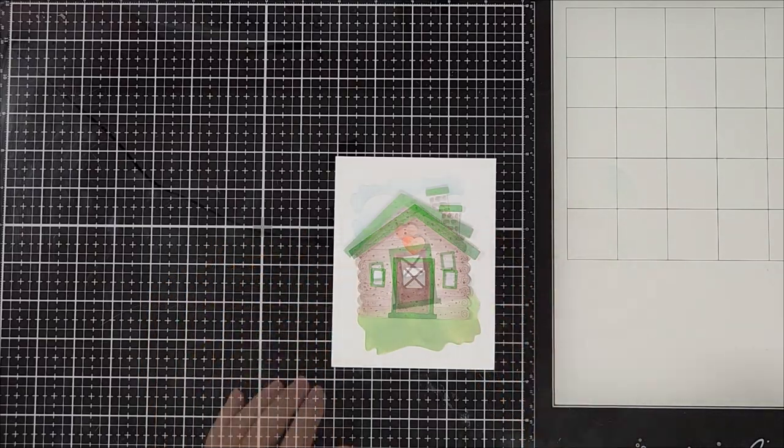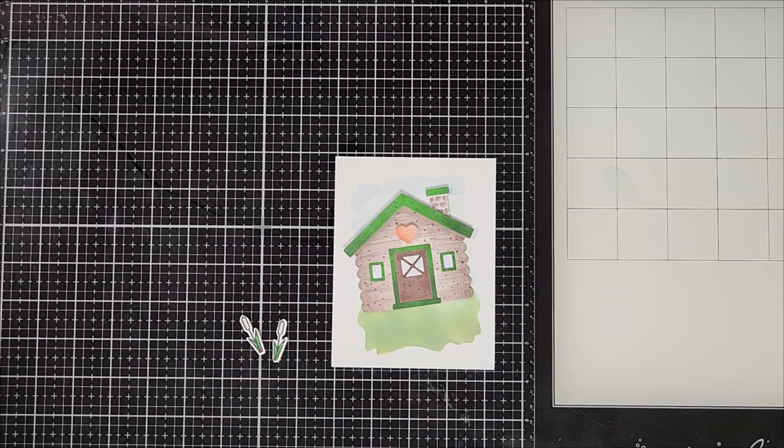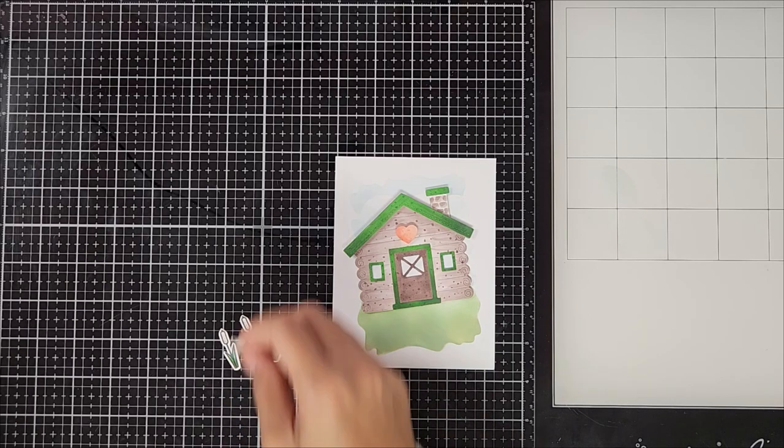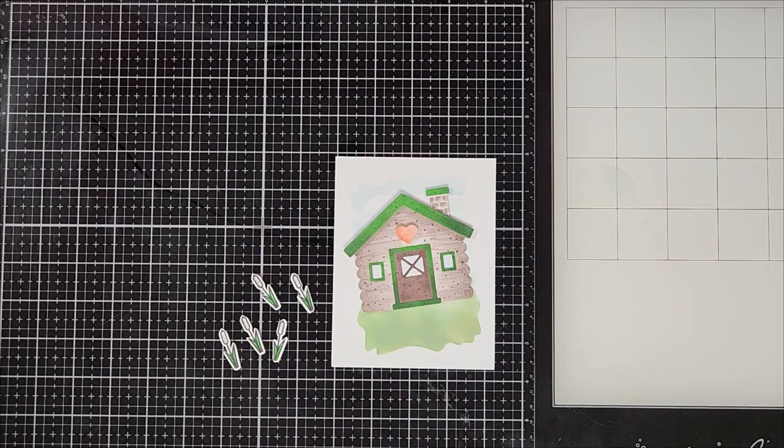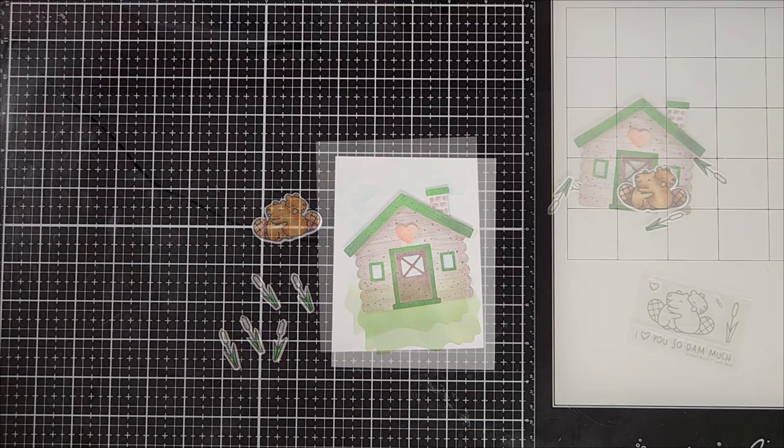Okay, so I went ahead and die cut all of the images that we colored in earlier. So you could see here my little beaver couple and along with some cattails. I am going to put this onto my card panel, but before I do that, I want to add a little more interest onto the background scene.